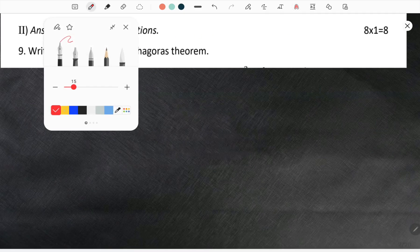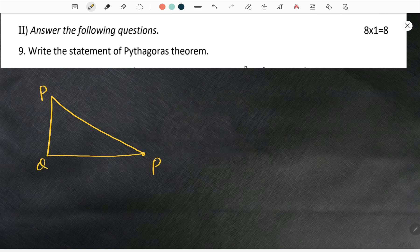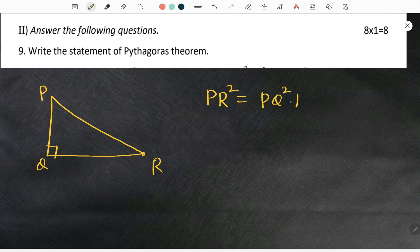This question keeps repeating many times. So you know the Pythagoras theorem. Here is the right triangle. Let me name it as PQR and here it is 90 degrees. So we are going to get PR square is equal to PQ square plus QR square.